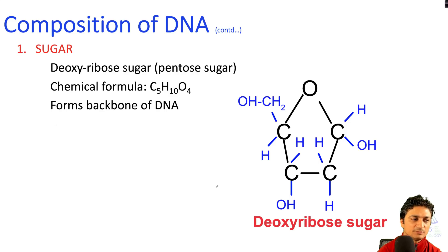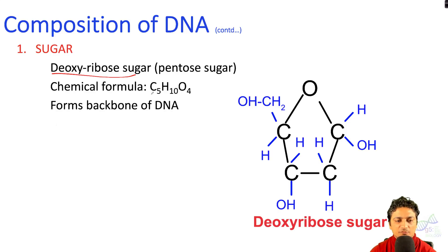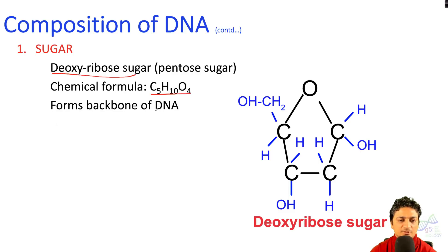The sugar present in DNA is deoxyribose sugar, and it is a pentose sugar. Its chemical formula is C5H10O4. It is a five-carbon ring and it forms the backbone of DNA by combining with the phosphate group.